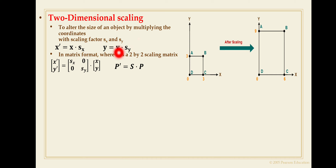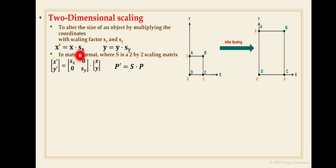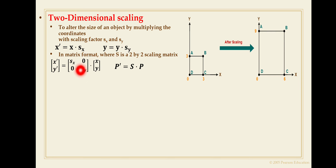These two equations can be written in matrix form, where S is the 2×2 scaling matrix. The matrix equation is: [x', y'] = [sx, 0; 0, sy] · [x, y]. For the x coordinate, the coefficient of x is sx and the coefficient of y is zero; for the y coordinate, the coefficient of x is zero and the coefficient of y is sy. This matrix [sx, 0; 0, sy] is known as the scaling matrix.